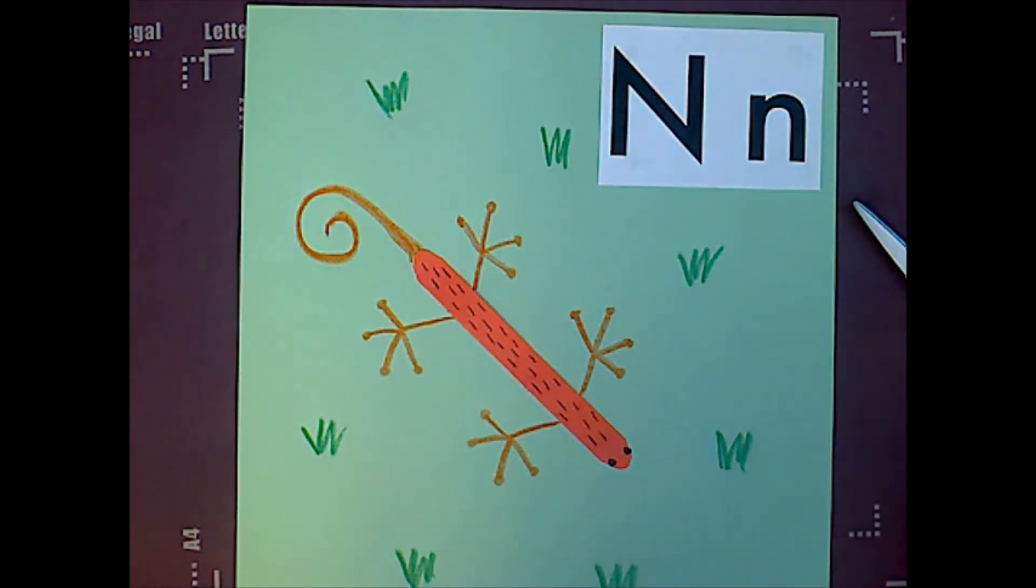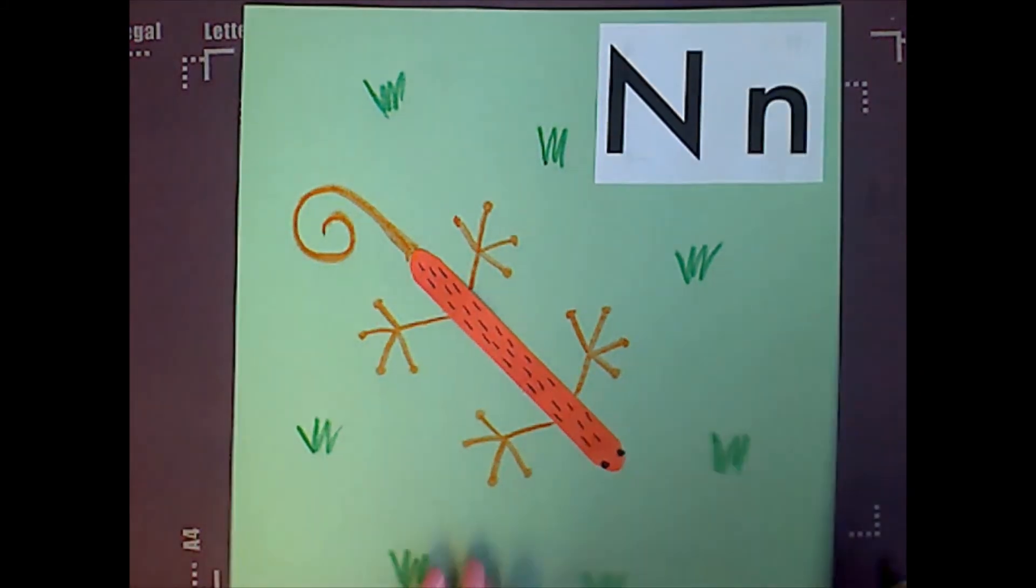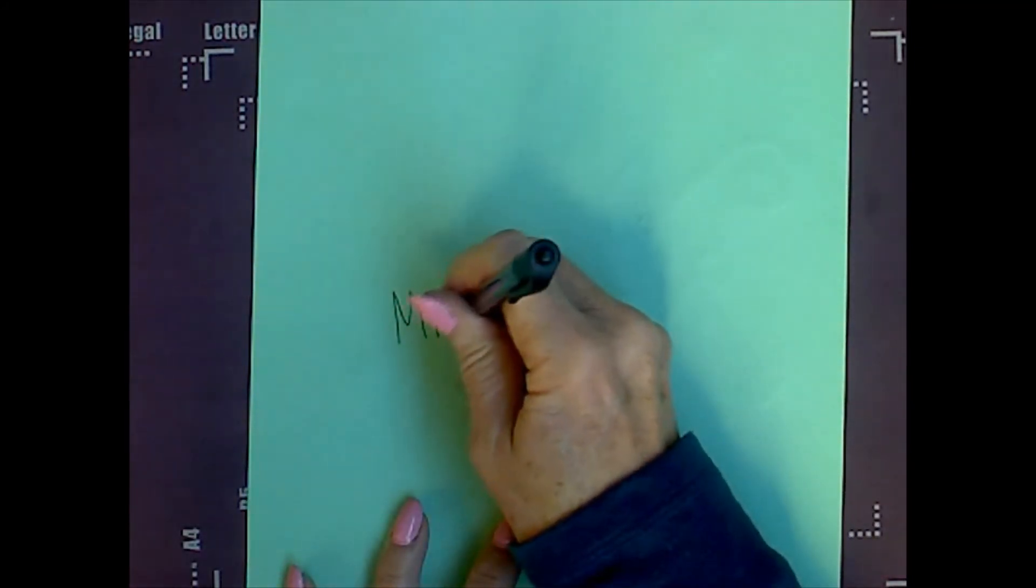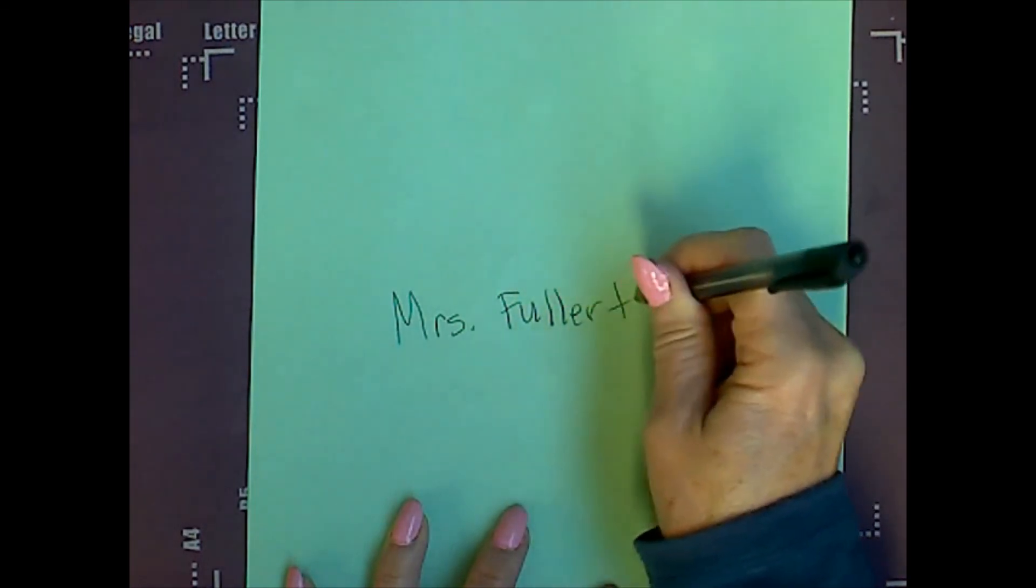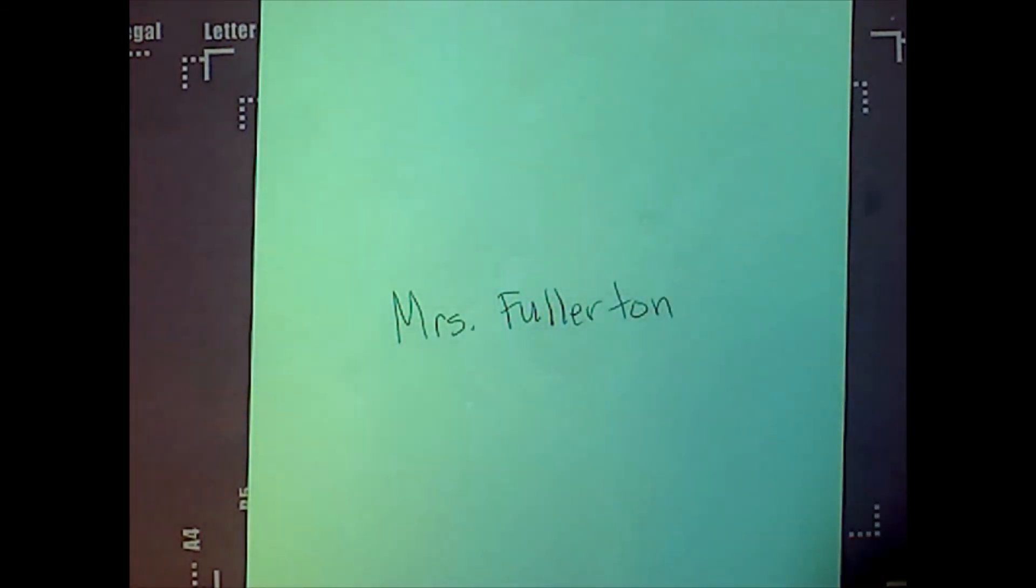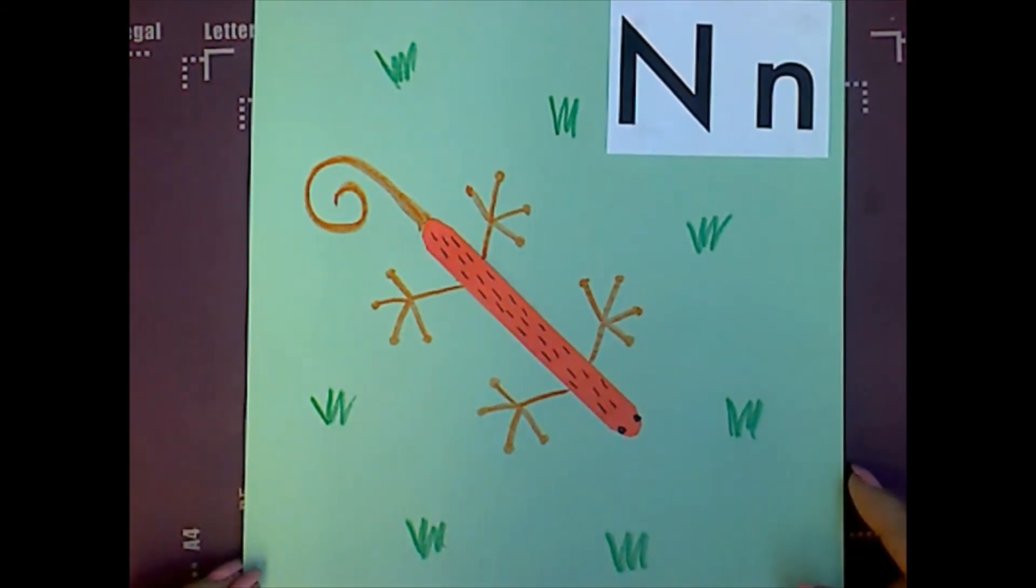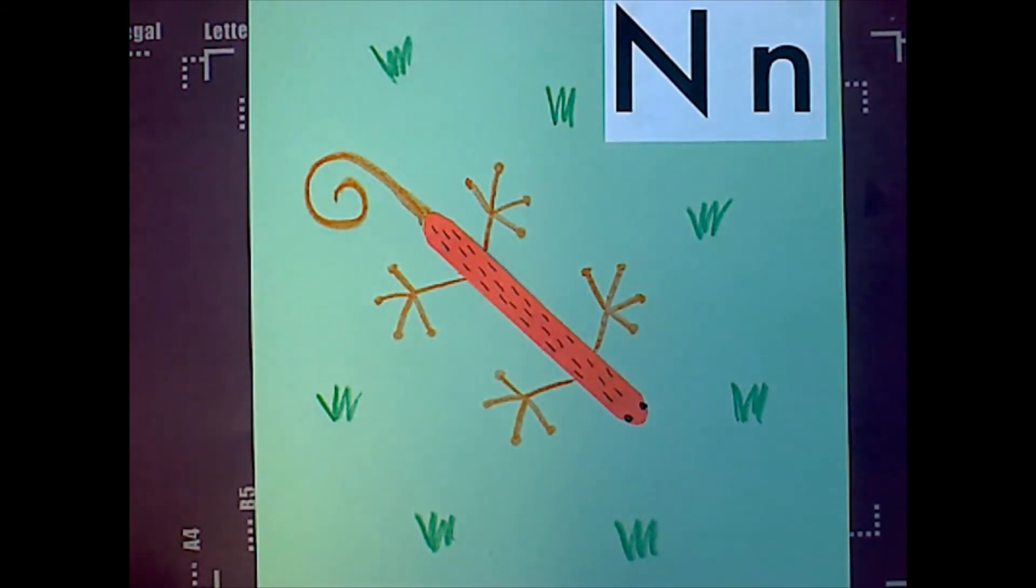And there, we're done. This was a very easy ABC page. You can turn that over and use your black pen and write your name on the back so I know that it's yours when I get them back at school. And I can make sure to put it into your book. That is our newt.